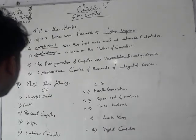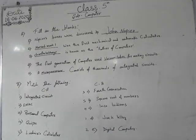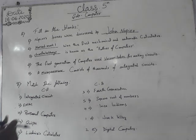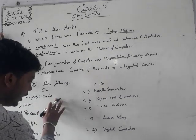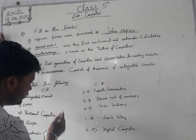Number five: it consists of thousands of integrated circuits — answer is microprocessors. Then next — match the following. Number one: integrated circuit — answer is D.